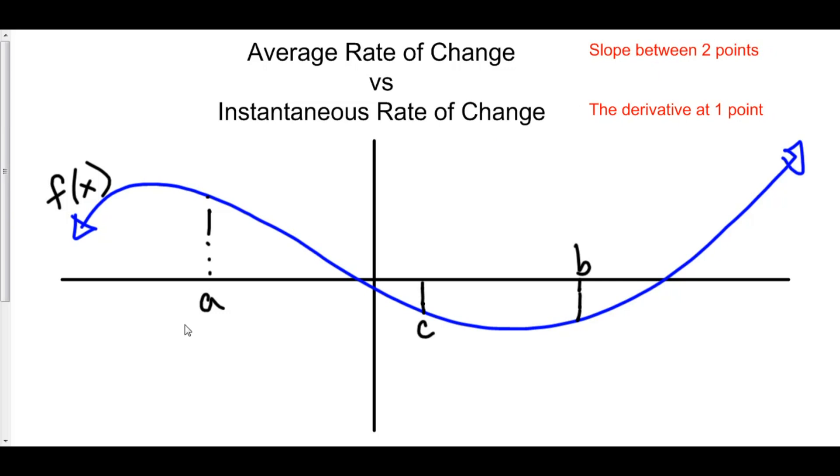So consider two points: a comma f of a, and b comma f of b. The average rate of change from a to b is given by the slope of the line from a to b. So if you were to make a line from a to b and find the slope of that line, that is average rate of change. Average rate of change always occurs on some interval from one point to another point.